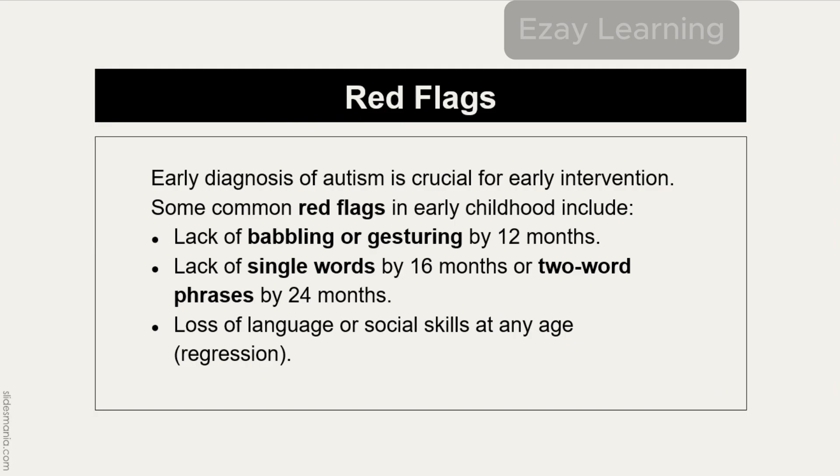Early diagnosis of autism is crucial for early intervention. Some common red flags in early childhood include lack of babbling or gesturing by 12 months. There are some developmental milestones of a child, and if the developmental milestones are delayed, these could be red flags that autism is or would be present.